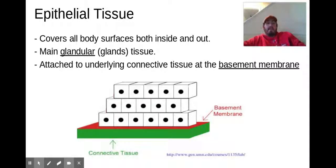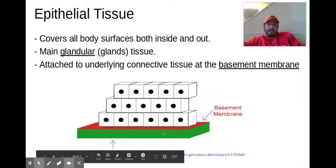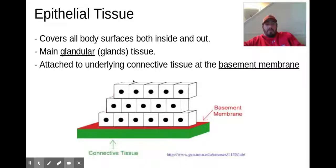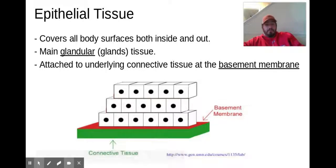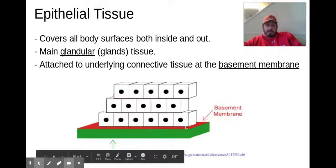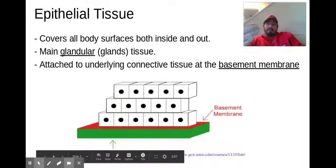Epithelial tissue attaches to underlying connective tissue via what we call the basement membrane. In this diagram, we see epithelial tissue up top — which would make up your skin. Below it, the green is connective tissue, which connects down to muscle tissue below that. In between, we have this basement membrane — think of it as the layer between the connective tissue and our epithelial tissue.